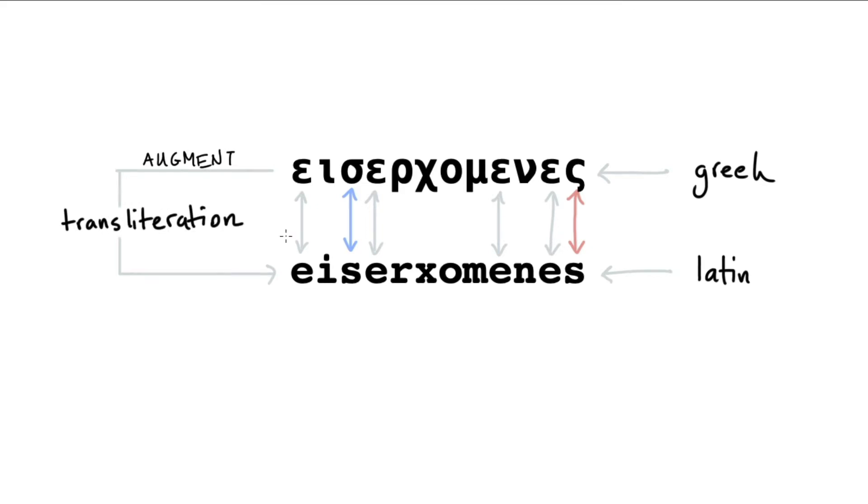And transliteration, in general, is a very hard problem. But for some languages, it is relatively easy. And it turns out that going from Greek to Latin and back is one of these somewhat easy cases. That's mainly because the characters tend to have not a perfect, but a somewhat perfect mapping from one another.